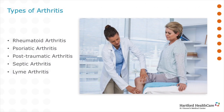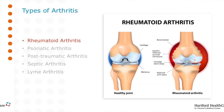Here are some of the more common types of arthritis including rheumatoid arthritis, psoriatic arthritis, post-traumatic arthritis, septic arthritis, and Lyme arthritis. Rheumatoid arthritis is a long-lasting disease that affects many parts of the body, but mainly the joints. The immune system, which normally protects the body, begins to attack the joint lining causing swelling, pain, and deformity.